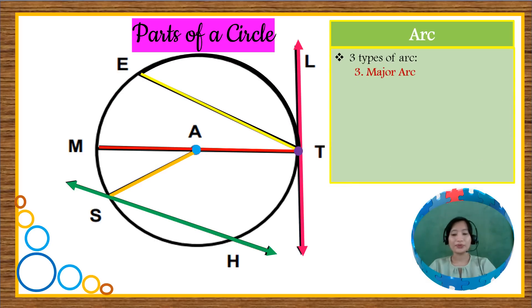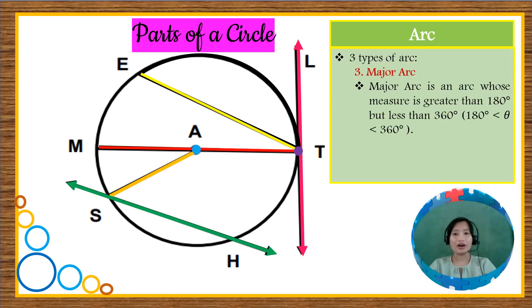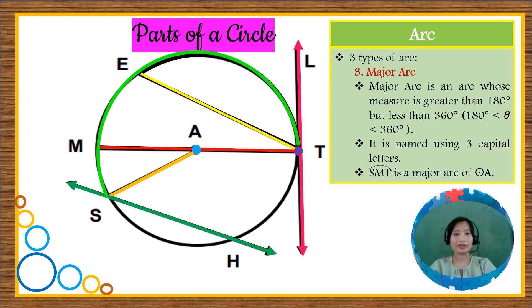The third one is the major arc, which is an arc whose measure is greater than 180 degrees, but less than 360 degrees. It is named using three capital letters. For example, we have this arc. We can name this as arc S-M-T using these three points, S-M and T, or we can also name it as S-E-T as long as we use three letters to name our major arc.